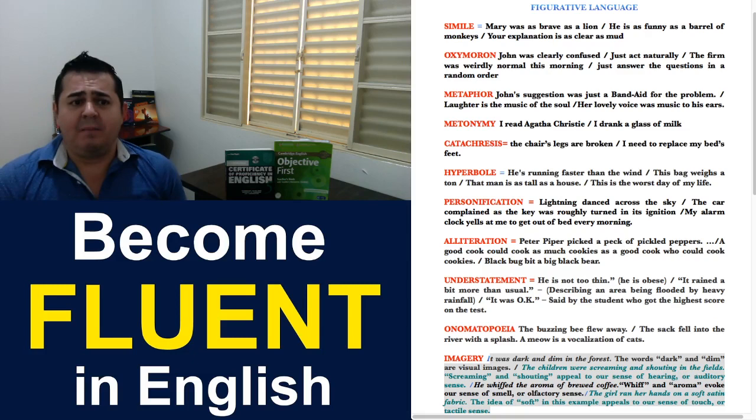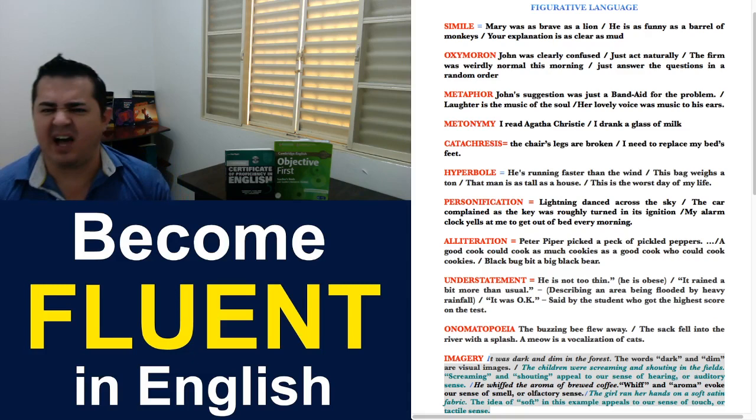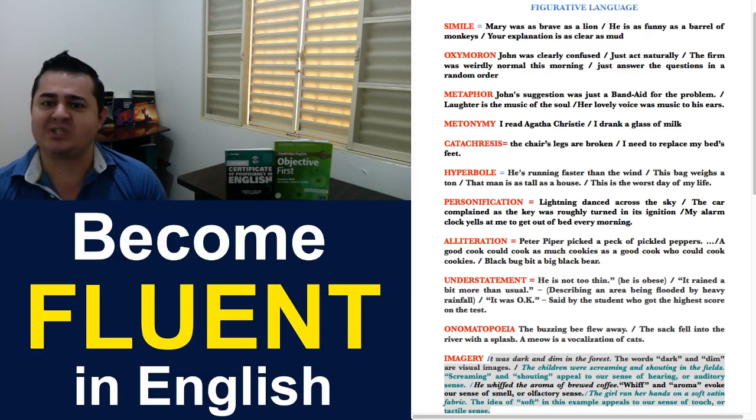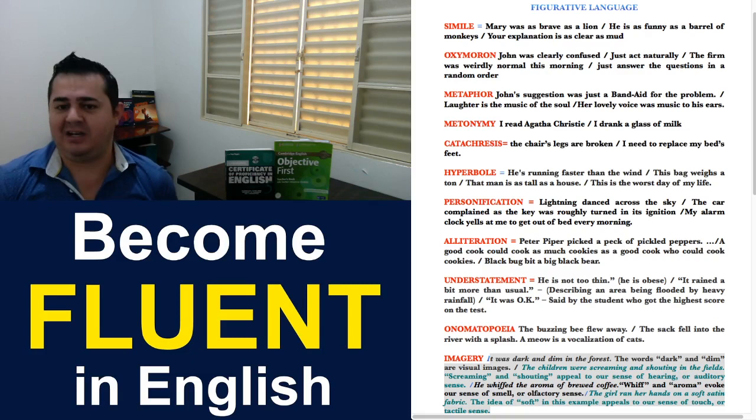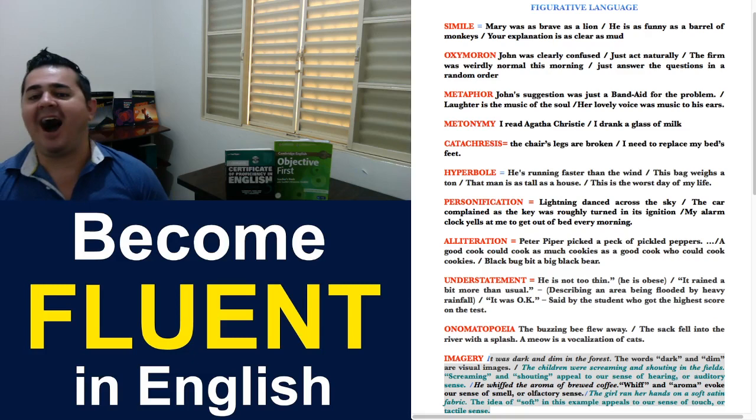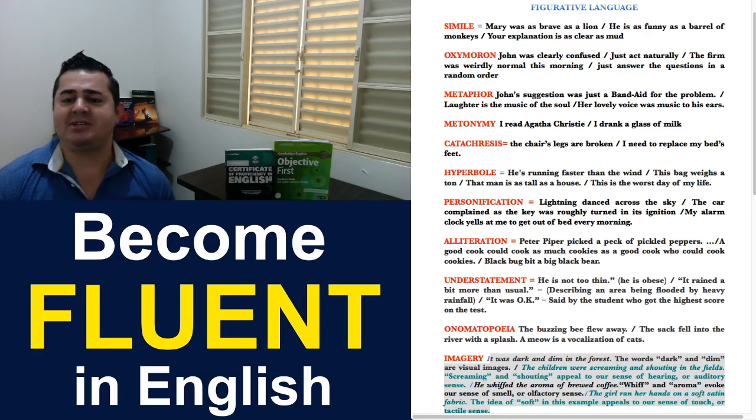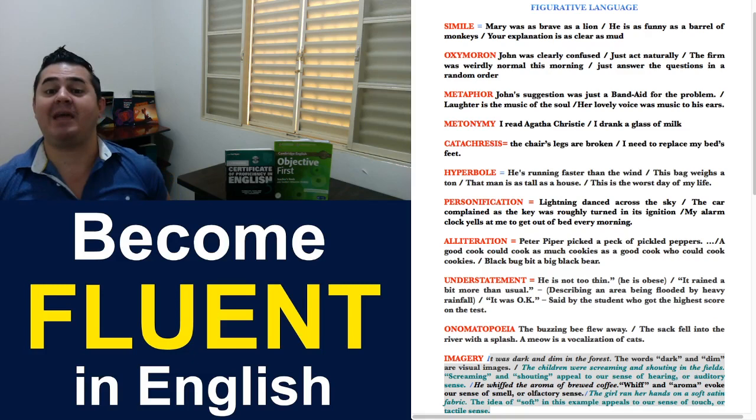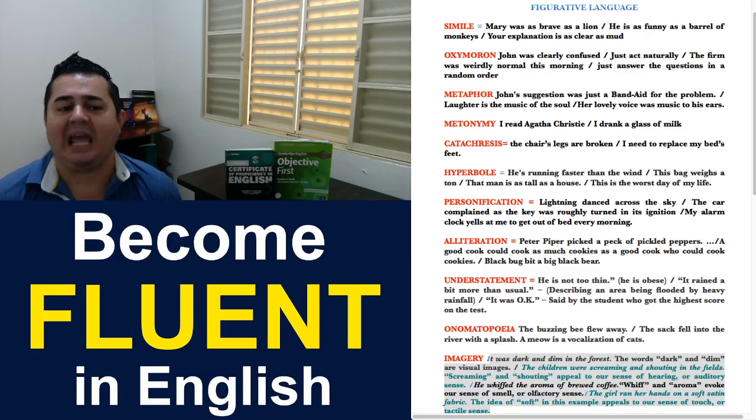Let's move to the next one: Catachresis. Basically, when we associate parts of our body to objects, and vice versa. It's called catachresis. For example, the chair's legs are broken. We know that what goes under the chair to sustain the chair, they are not legs. Legs is what we have in our bodies, what animals have in their bodies, but because the chair has legs, we are using a human's body part on a chair. And the second example: I need to replace my bed's feet. Again, feet is used for people and animals. They are not used for objects. But, in this case, we are lending our body parts to an object. And that's called, in English, catachresis.